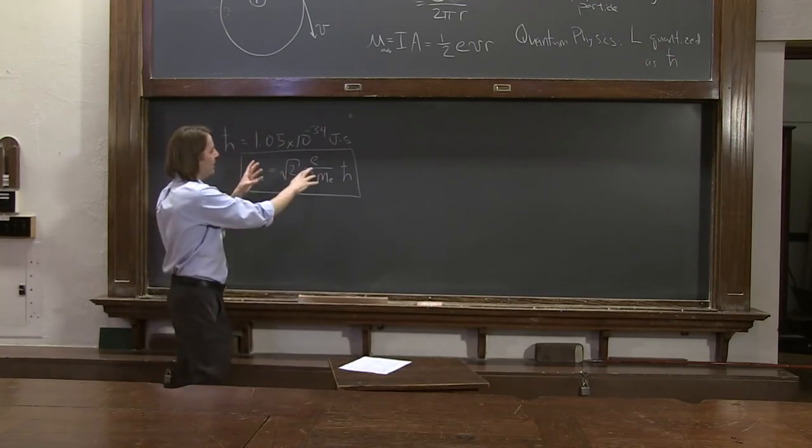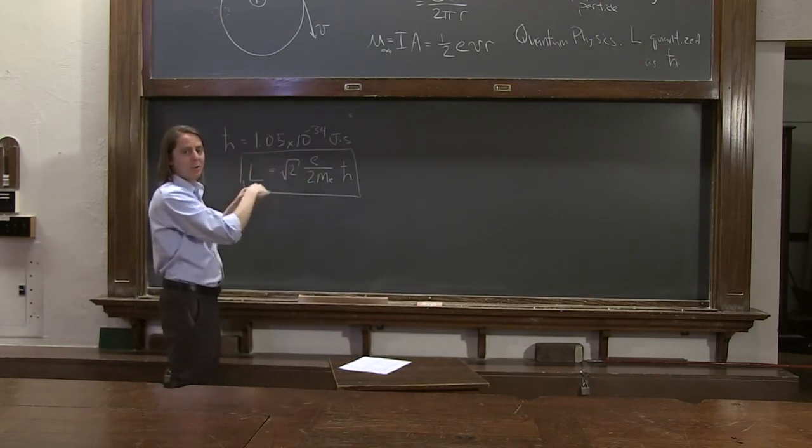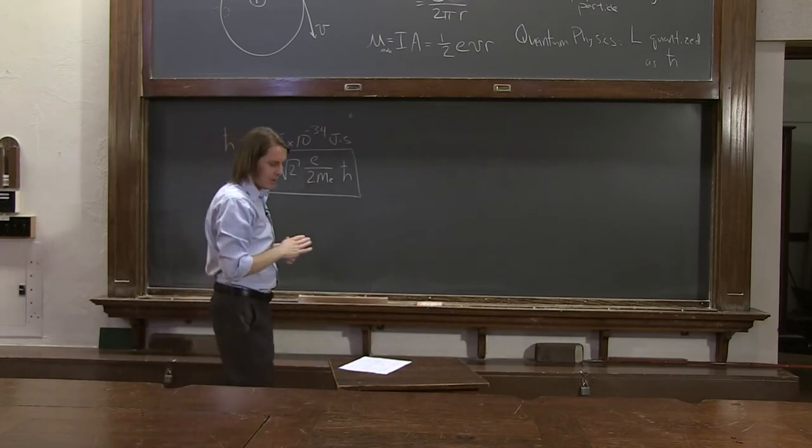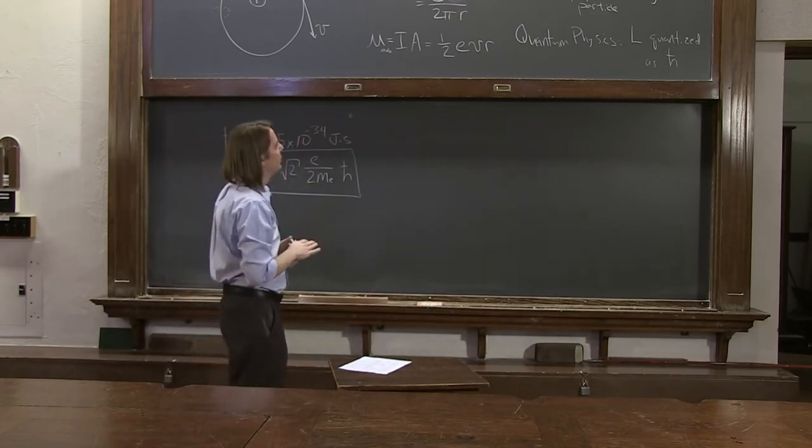So according to quantum mechanics, then, it could have another one higher, it would jump up in a quantum jump to the next one to the next one. But for now, we'll just think about this lowest non-zero value.